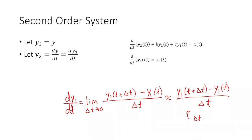The problem is that 'sufficiently small' is not necessarily easy to answer. In some problems, Δt could be one second; in others it could be one microsecond. So sufficiently small is defined by the nature of the solution — you have to think about what you expect the solution to look like in order to make that choice reasonable.